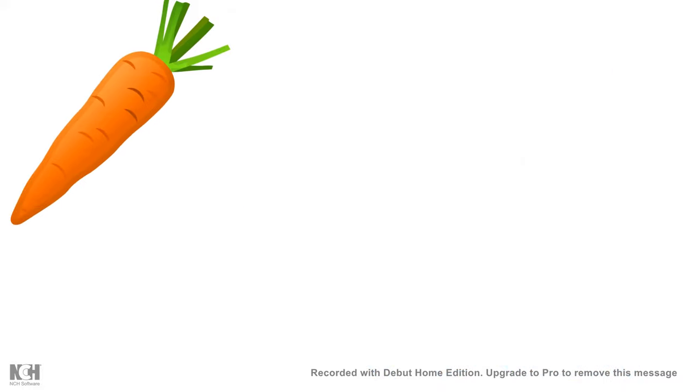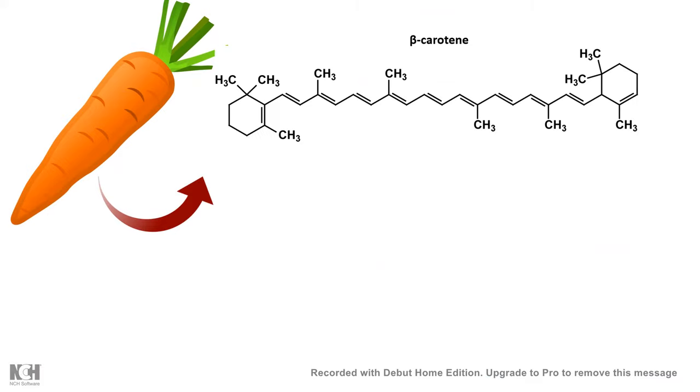The main pro-vitamin for vitamin A is beta-carotene. Beta-carotene is derived from carrot.